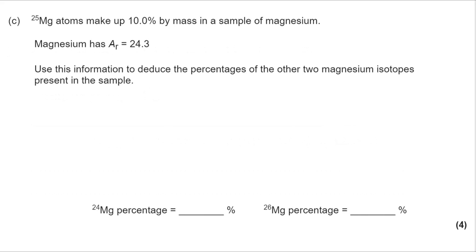So what we need to do is use X and you can see here that what we've got, the overall AR is 24.3. If I say that X is the percentage of magnesium 24 and I know that it's 10% of magnesium 25,